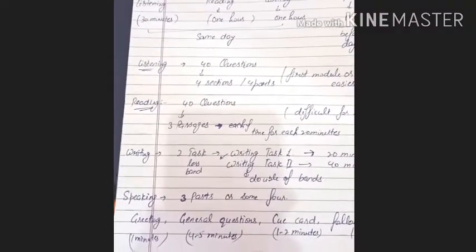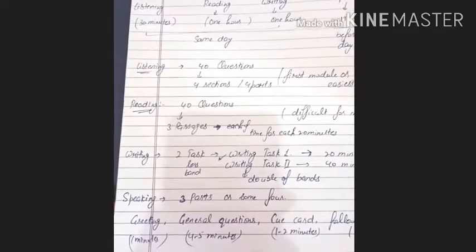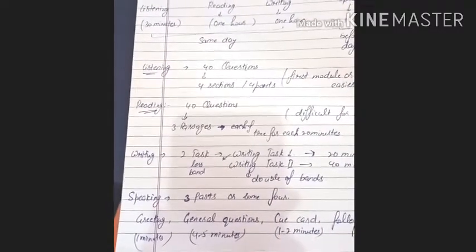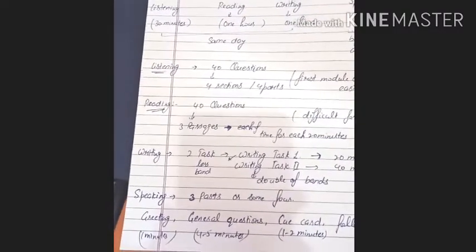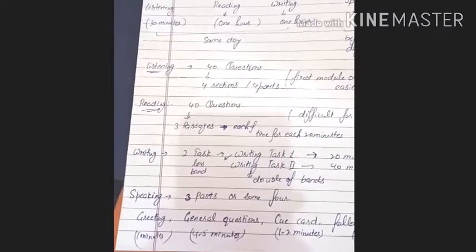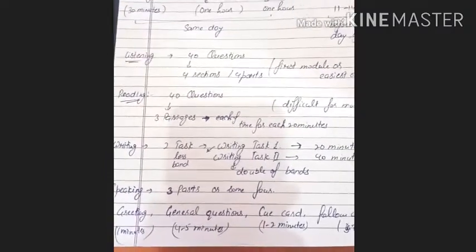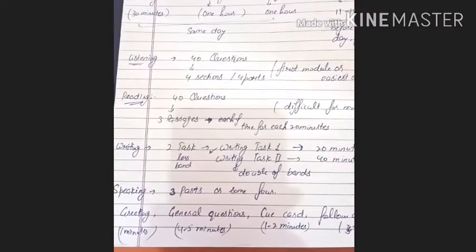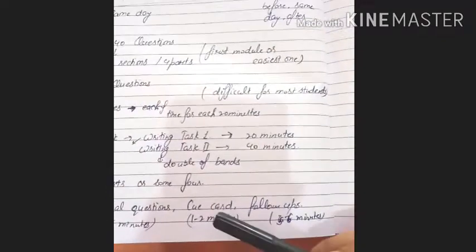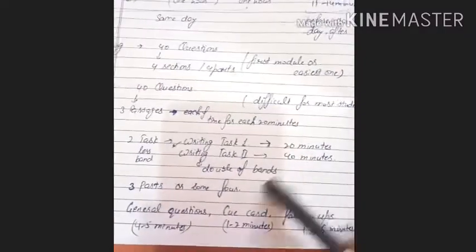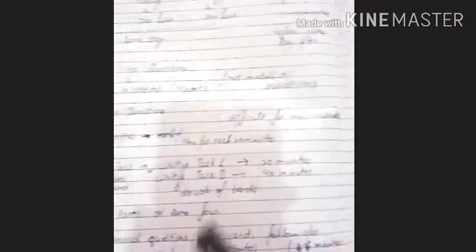And speaking part, we have 3 parts or sometimes people think there is a 4th part. First of all, there is a greeting. That is general information where the examiner asks about our name or sees your identification. After that, there is part 1 where general questions are asked related to ourselves. Then there is a cue card and follow-ups. Follow-ups are related to the cue card. For this, we have 11 to 14 minutes.